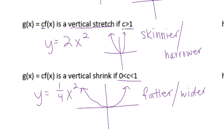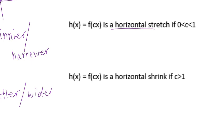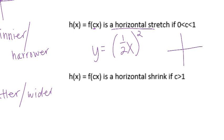So these are all vertical. Vertical stretch makes it narrower — the number is greater than 1. Vertical shrink makes it wider — the number is a fraction. Now let's look at horizontal. The difference is the c is inside the x, so you're plugging in cx for all the x's. So this is where you'd say y equals (one-half x) squared. This is going to be a horizontal stretch.